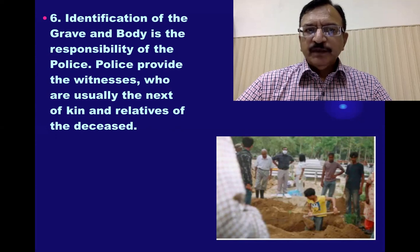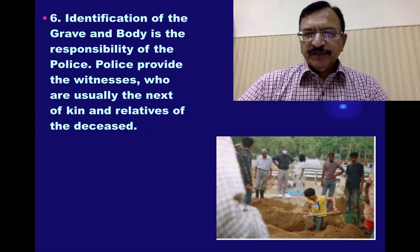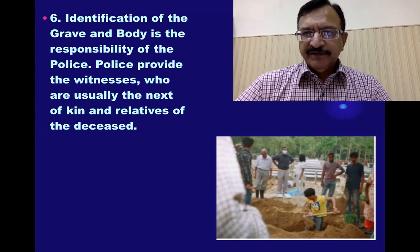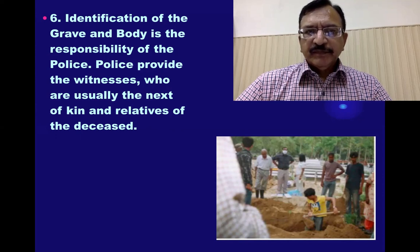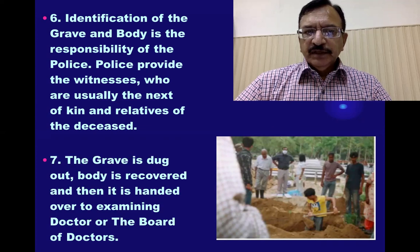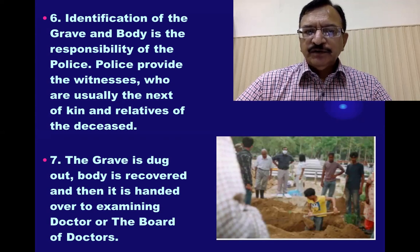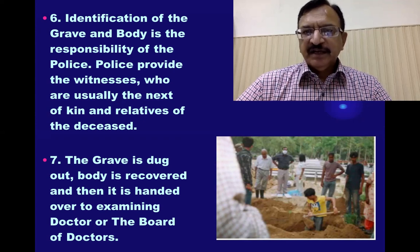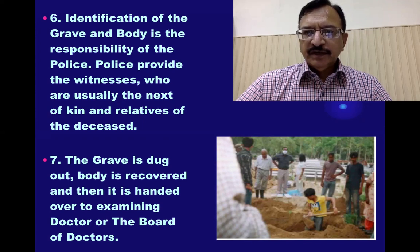Police provide the witnesses who are usually the next of kin or the relatives of the deceased. They identify the grave, and after exhumation the identification is by the identifiers. The grave is dug out, the body is recovered, and then it is handed over to the examining doctor or the board of doctors if it is a second autopsy, or review autopsy, in which case the board of doctors will conduct it.